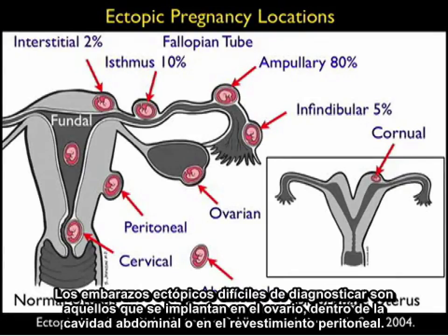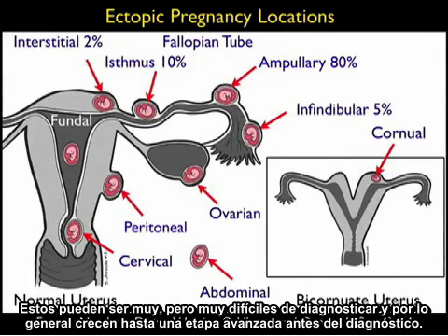Tough ectopics to diagnose are those that implant within the ovary, within the abdominal cavity, or within the peritoneal lining. These can be very hard to diagnose and commonly grow to an advanced stage before diagnosis.